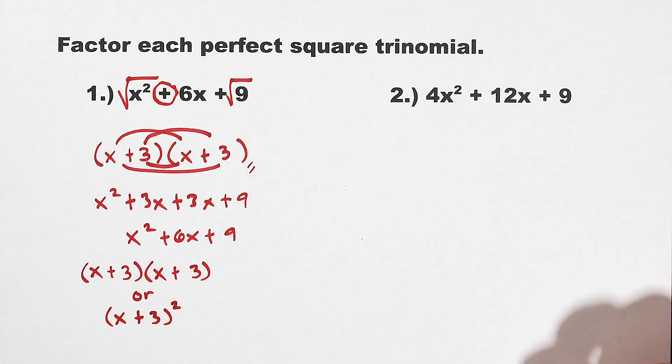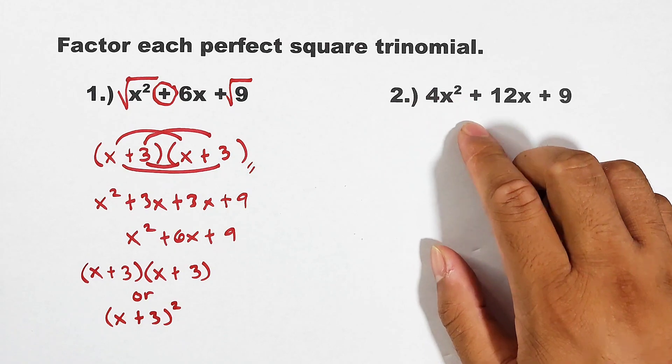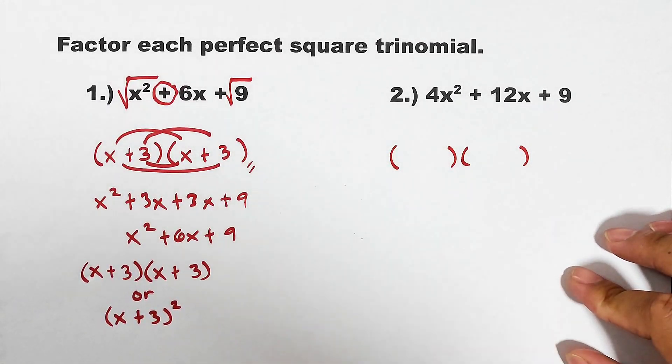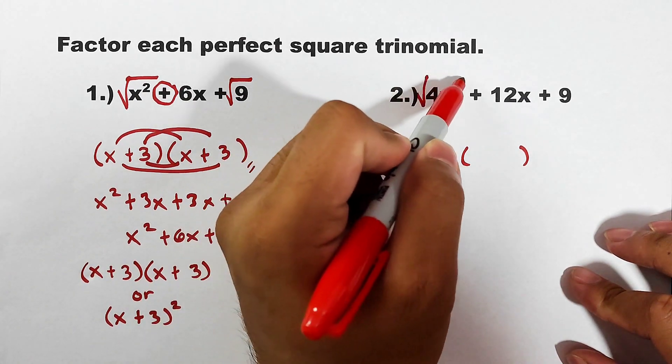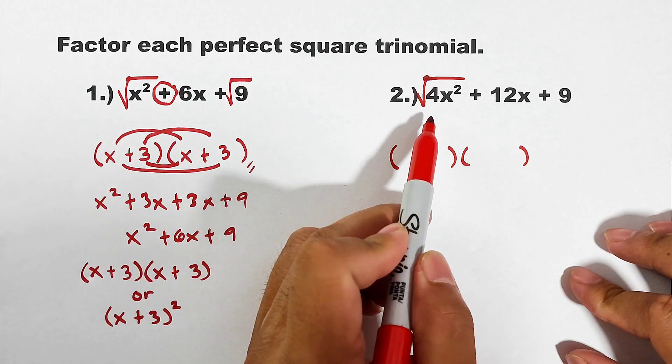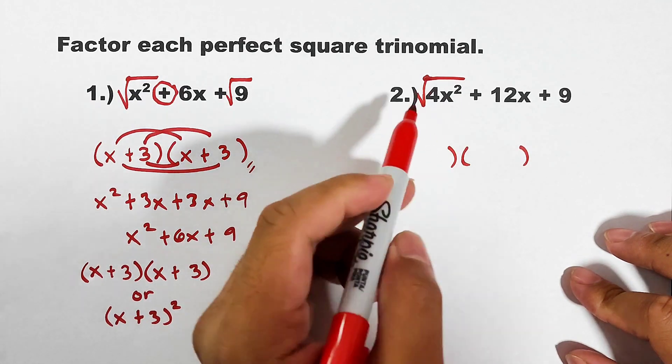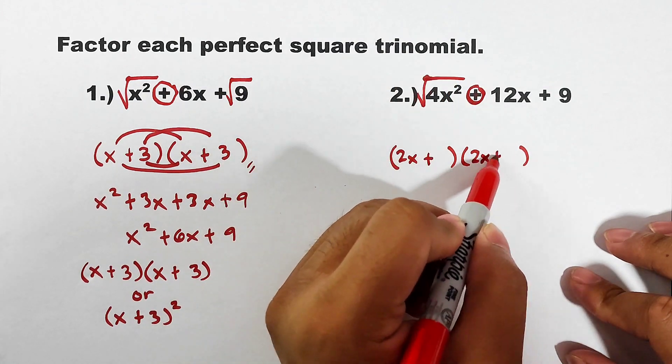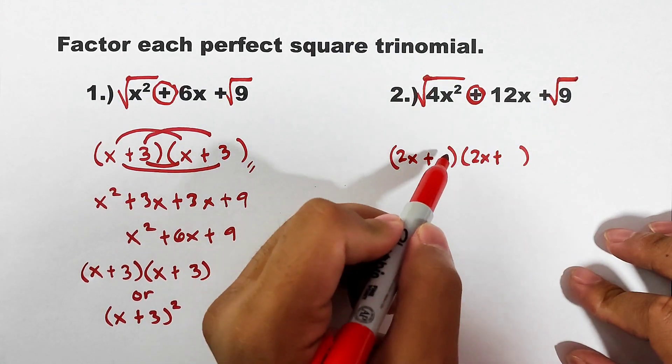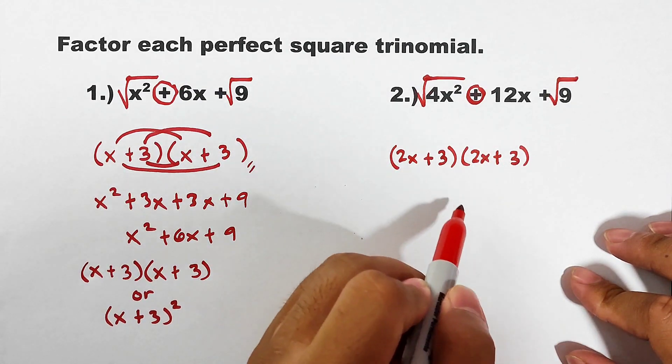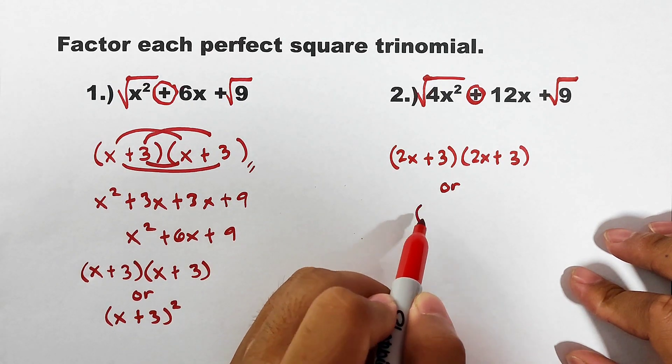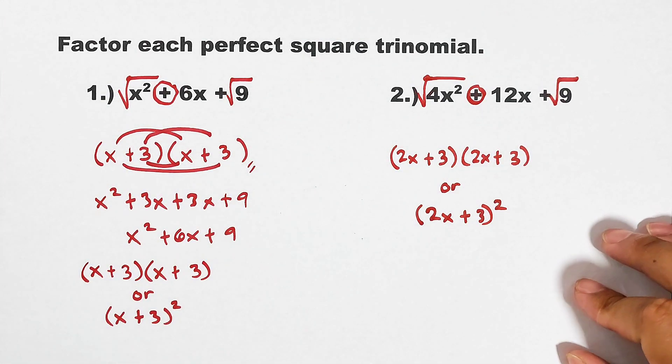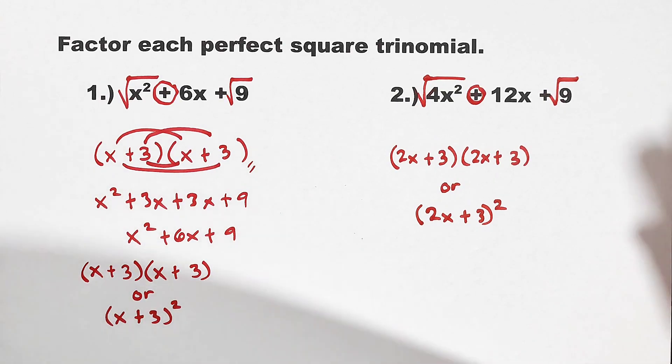So I hope you got number 1. Now let me show you how to do it in example number 2. We have 4x² + 12x + 9. So prepare two parentheses. Let's get the square root. Square root of 4 is 2, square root of x² is x, meaning the square root of 4x² is 2x. Copy the sign, plus. The square root of 9 is 3. Now, yes, we express our factors as the square of binomial, so it will be expressed as (2x + 3)². These are the possible answers.